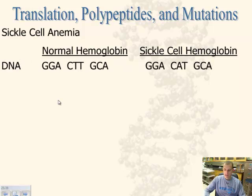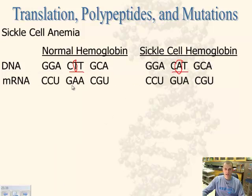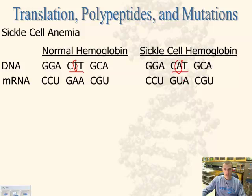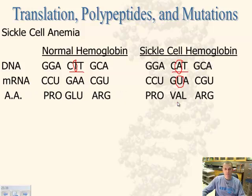Looking at the DNA of a normal person coding for blood, here is the location we're examining — the normal code is CTT. In the sickle cell version, you can see a substitution has occurred: instead of a T, you have an A. How does this affect the messenger RNA? Here's the normal GAA, and on the sickle cell side, what has happened is it's coded for a U instead of the A. This one substitution will change the amino acid being coded for.